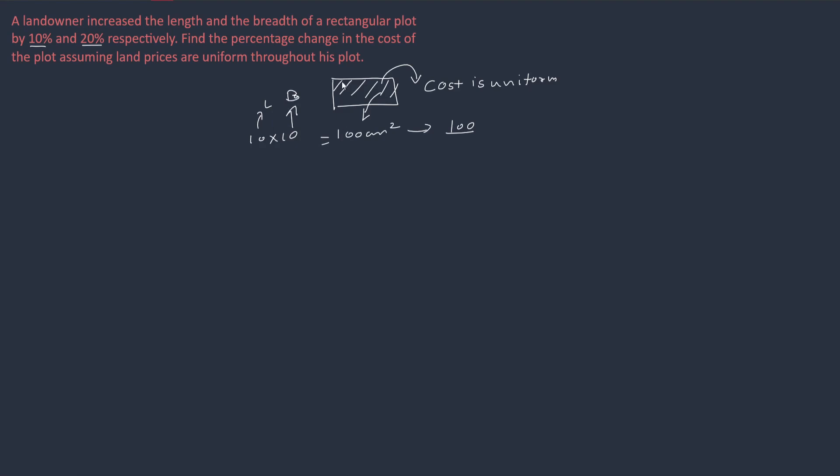Now, coming to the first part of the question: A land owner has increased the length by 10%. 10% means 10 plus 1, 11. And breadth increased by 20%. 20% means 2. 10 plus 2, 12. So area is 11 into 12.